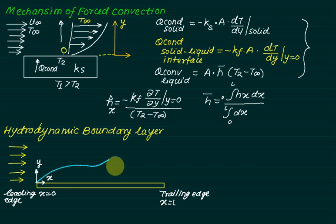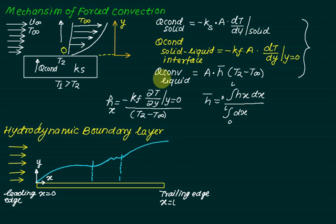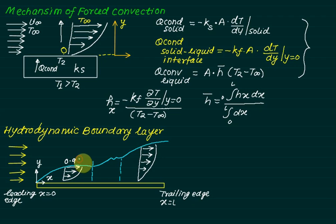First, there is a laminar flow region from the leading edge up to a transition point, then a transition region, and finally a turbulent flow region. At the wall, velocity equals zero, and as we move in the y-direction, the velocity increases to approximately 0.99 U∞, beyond which the fluid moves at the free stream velocity U∞. The region enclosed from the solid wall up to this point is called the hydrodynamic boundary layer, and its thickness is represented by δ_H.